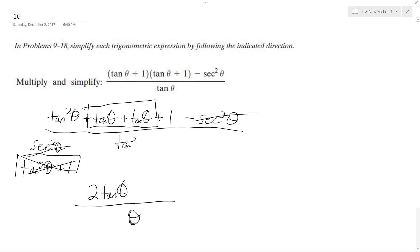So then on the bottom I get tangent theta, tangent theta, and then one of these cancels off. And we're simply left with two over tangent theta.